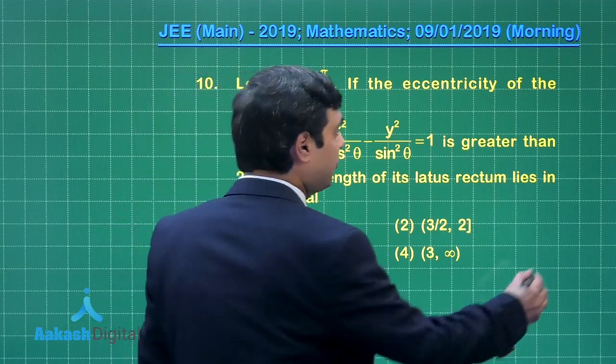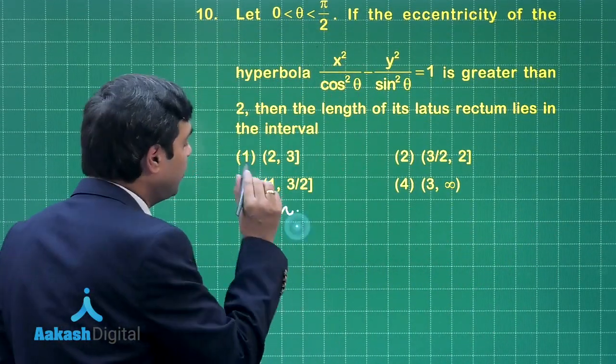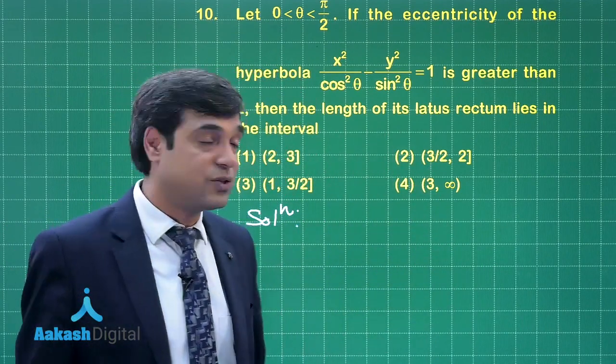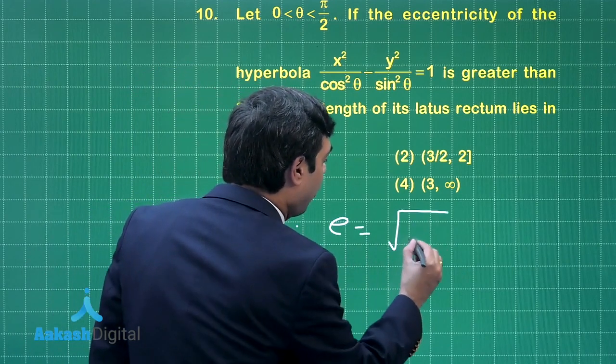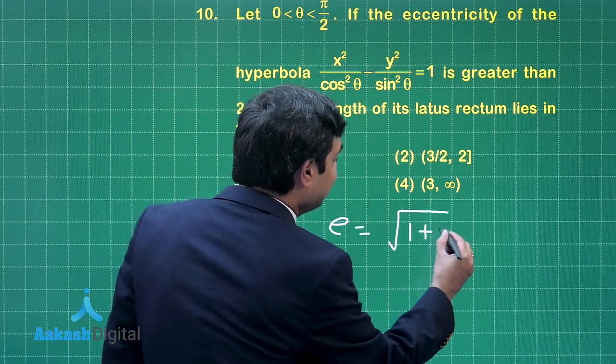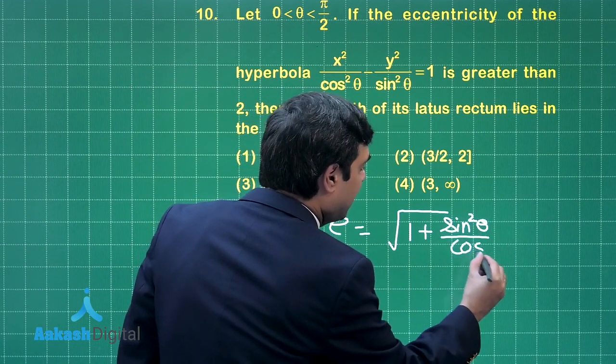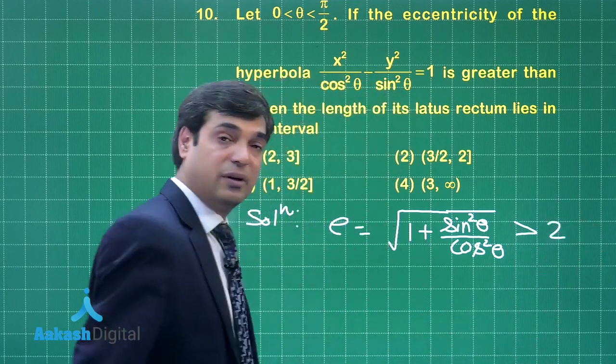Let us start this question from coordinate geometry. The hyperbola is x²/cos²θ - y²/sin²θ = 1. So eccentricity is √(1 + sin²θ/cos²θ) and it is given to us it is greater than 2. This is clear.